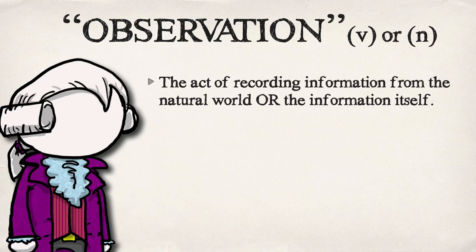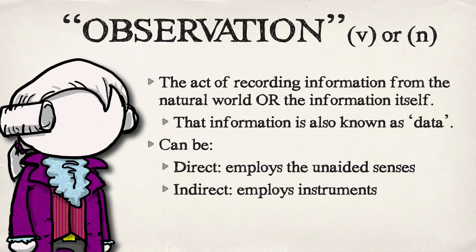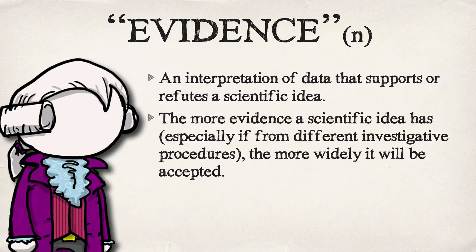Observations is just the act of recording information, or more probably just the information itself, so it's a synonym for data. These can be direct observations employing the unaided senses, or they could be indirect, which employs instrumentation — so looking through a telescope is indirect, while listening to something directly would be direct. Evidence is data that's been interpreted to support or refute a scientific idea. The more evidence a scientific idea has, the more widely it will be accepted, especially if it comes from different investigative procedures — that's called multiple lines of evidence.